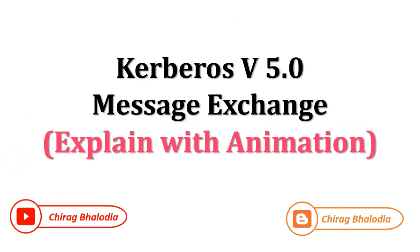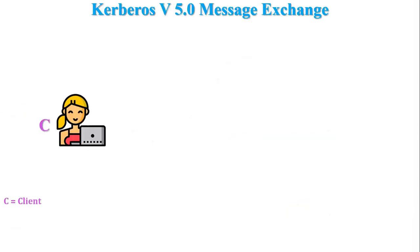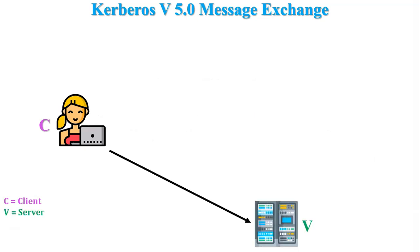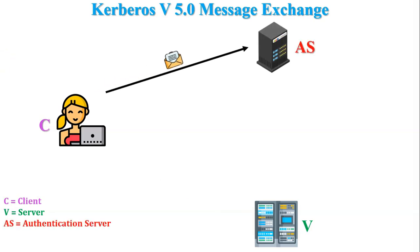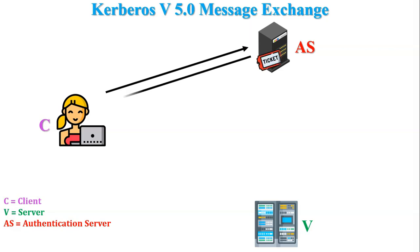First I will explain the message exchange scenario through animation. For example, there is one client. The client wants to access services from the server, but the client cannot connect with the server without authentication. So the client sends a request to the authentication server. The authentication server checks the authentication of the client. If the client is authenticated, the authentication server accepts the request and sends a reply message along with a ticket to the client.